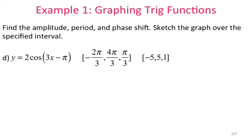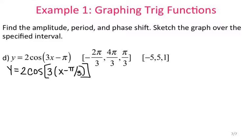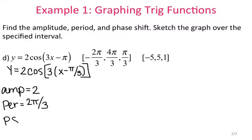One more example. We have a number in front of x, so let's factor that out first. I have y equals 2 cosine, and I'm factoring out the 3. When you factor out the 3, you divide everything inside by 3, giving you the new equation. We factor it out because that helps us find the phase shift. The amplitude is still 2, the period is 2 pi divided by b which is 3, so the period is 2 pi over 3. The phase shift is positive pi over 3.